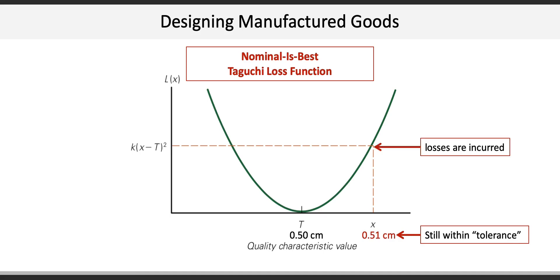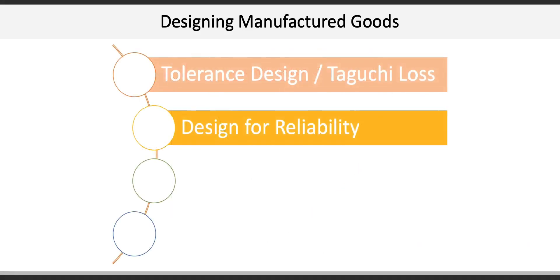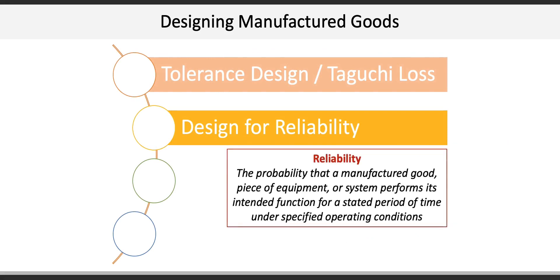The second activity is design for reliability, where reliability is simply the probability that a manufactured good, piece of equipment, or system performs its intended function for a stated period of time under specific operating conditions. For example, a Ford F-150 should start reliably between minus 60 and plus 160 degrees Fahrenheit.